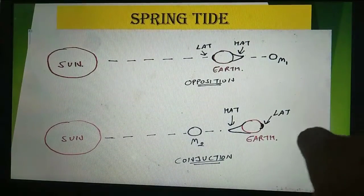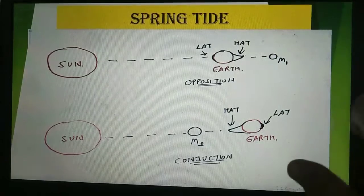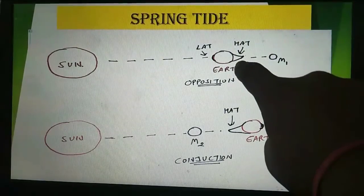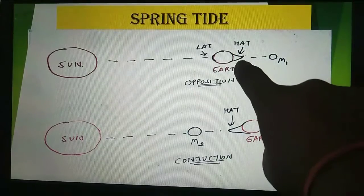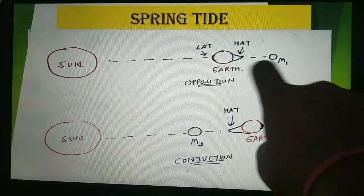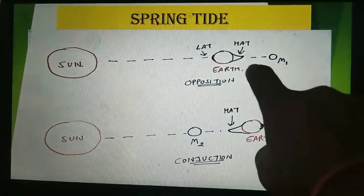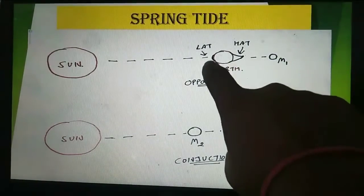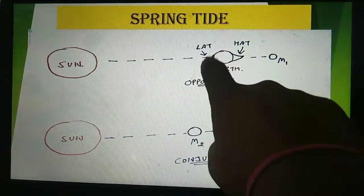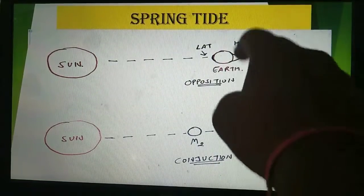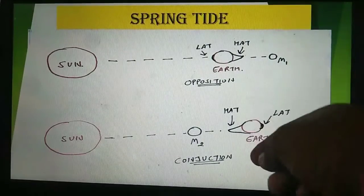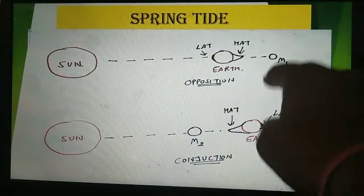As we know, tides are formed by the gravitational pull of the moon. As you can see here, this is the highest astronomical tide — the utmost highest astronomical tide formed here because of the gravitational pull of the moon. And here is the lowest astronomical tide, meaning the lowest possible astronomical tide formed here. So this is caused by the position of conjunction, and this is known as the spring tide.